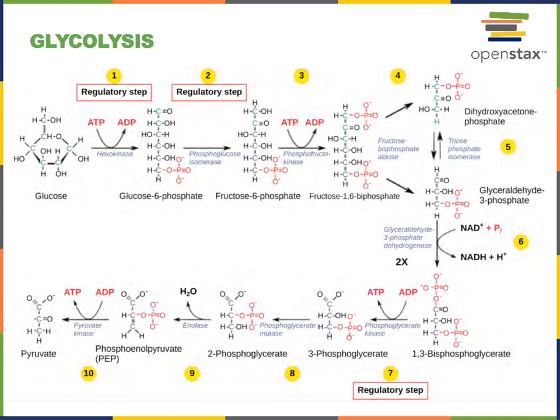The seventh step of glycolysis, catalyzed by phosphoglycerate kinase, transfers a phosphate group from 1,3-bisphosphoglycerate onto ADP to form our first ATP molecule. Since two molecules of 1,3-bisphosphoglycerate are produced for every glucose, this reaction occurs twice per glucose, generating two ATPs at this step, which cancels out the two ATPs consumed in the first and third steps of glycolysis.